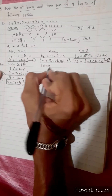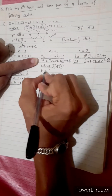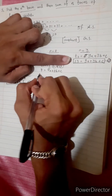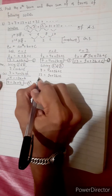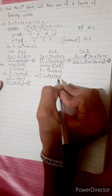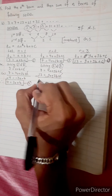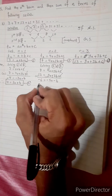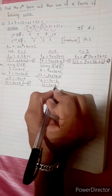Solving equations 2 and 3: equation 2 is 7 equals 4a plus 2b plus c, and equation 3 is 13 equals 9a plus 3b plus c. Subtracting, c cancels. 7 minus 13 equals negative 6, giving minus 6 equals minus 5a minus b. Therefore, 6 equals 5a plus b. Call this equation 5.